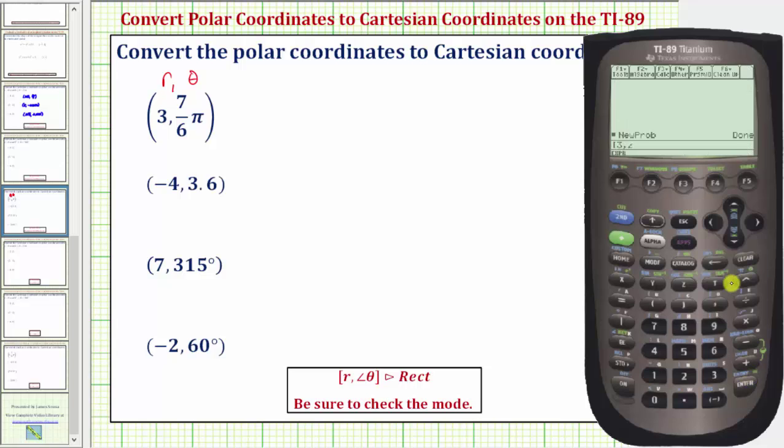Now we enter seven six pi. So seven divided by six pi is second, then the exponent key. The closed square bracket is second divide.